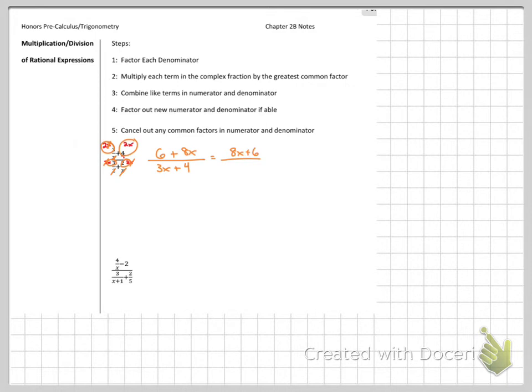Maybe rearrange it. 8x plus 6 is how we're used to seeing it. Check and see if the top factors. It does as a hint. There's a GCF in both of those, right? 2 comes out of both of those. Divide by 2, divide by 2. It almost matched the bottom, but it doesn't. So this is our answer.